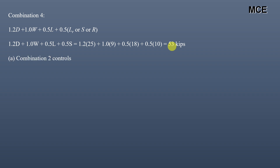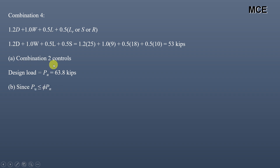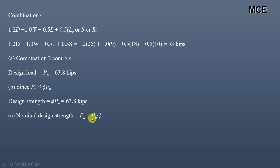Out of all four LRFD combinations, load combination 2 controls with the largest value. The design load for this column is 63.8 kips. This ultimate load must be less than or equal to the design strength, so the design strength equals 63.8 kips. The required nominal strength is the ultimate load divided by the resistance factor: 63.8 ÷ 0.9 = 70.89 kips.